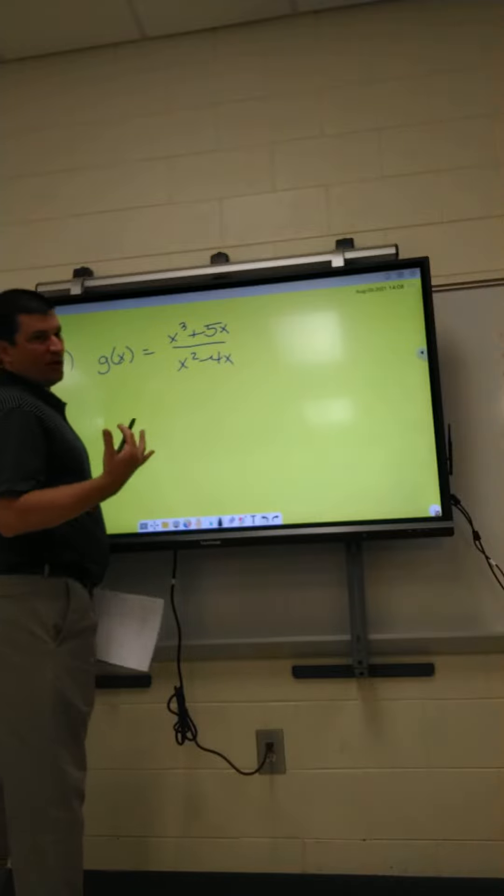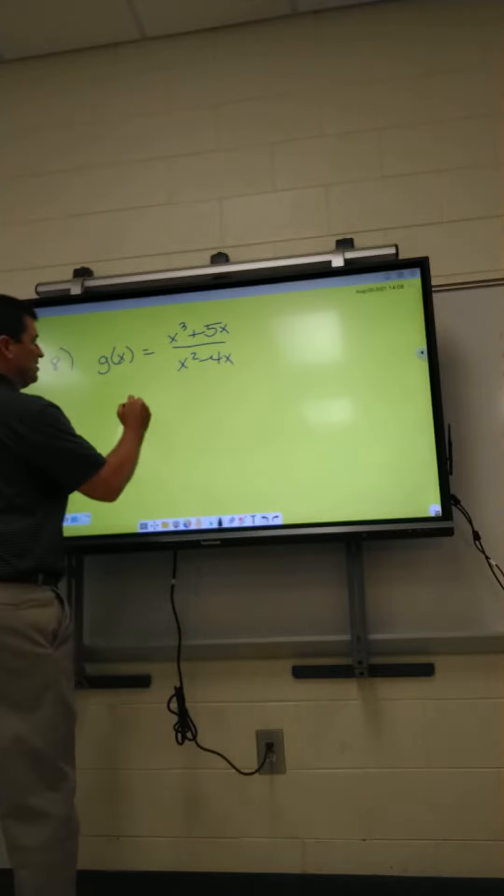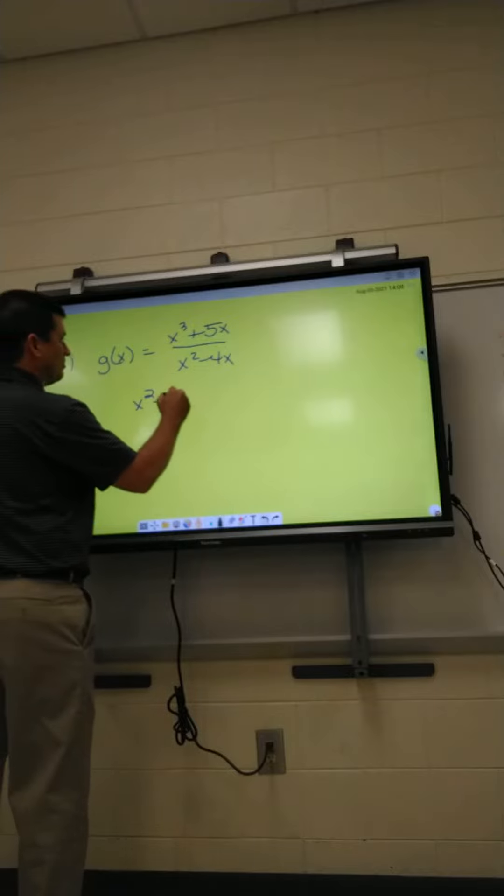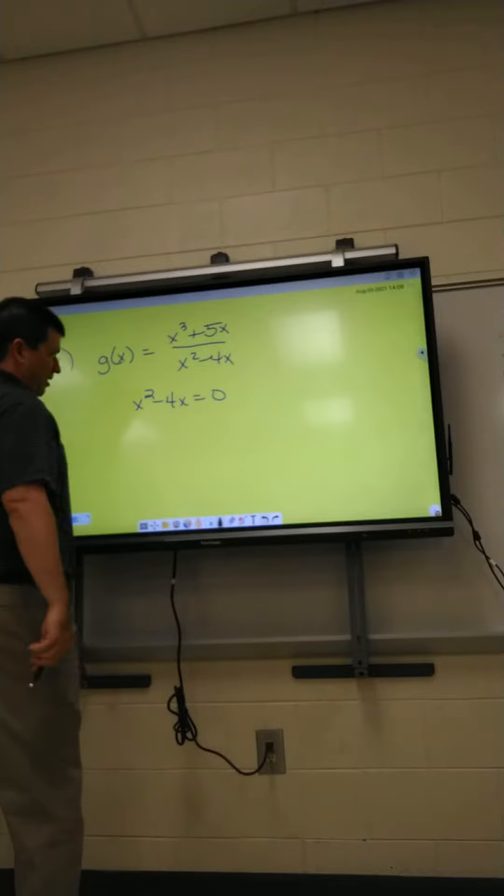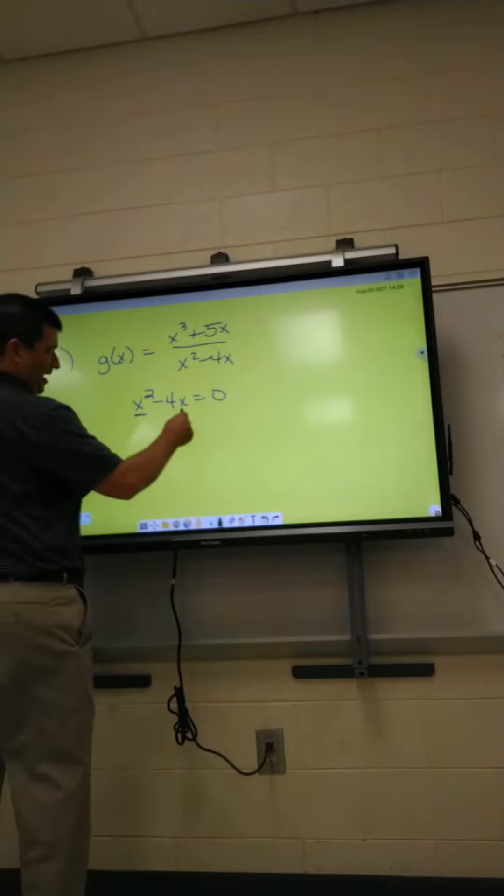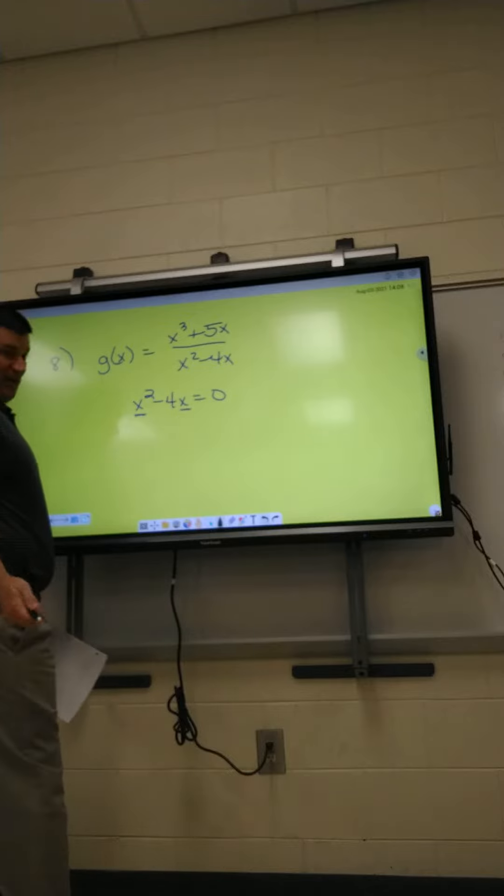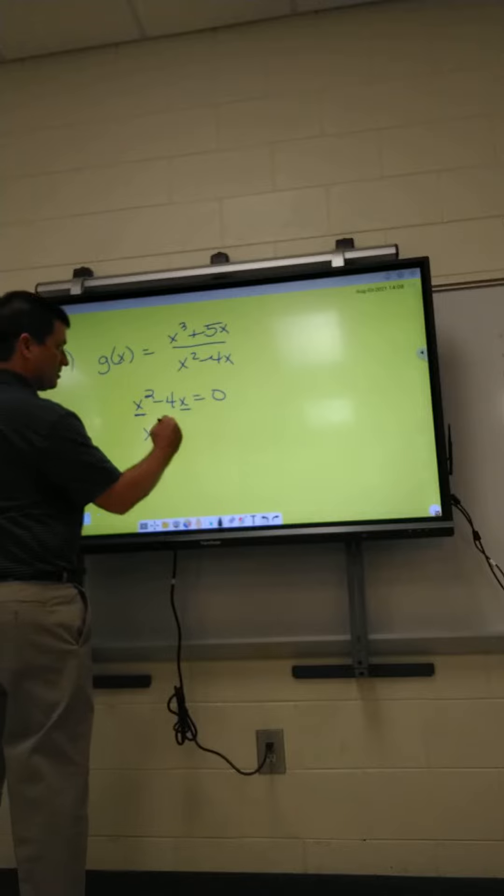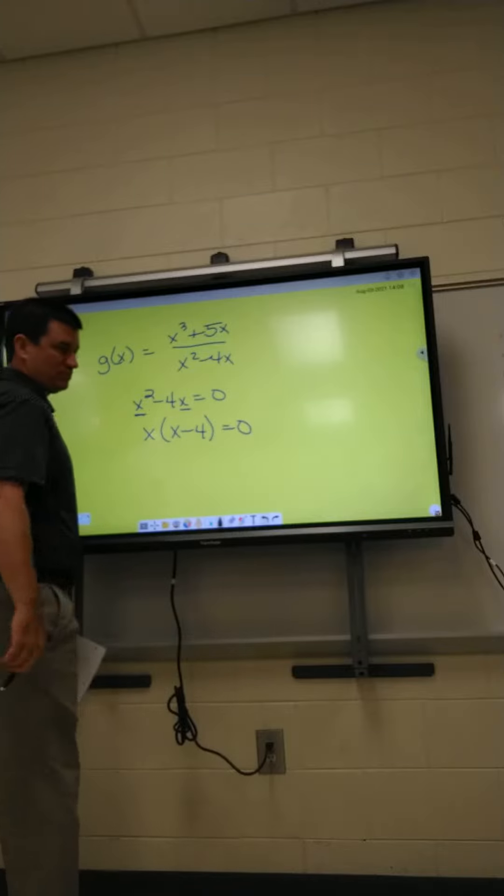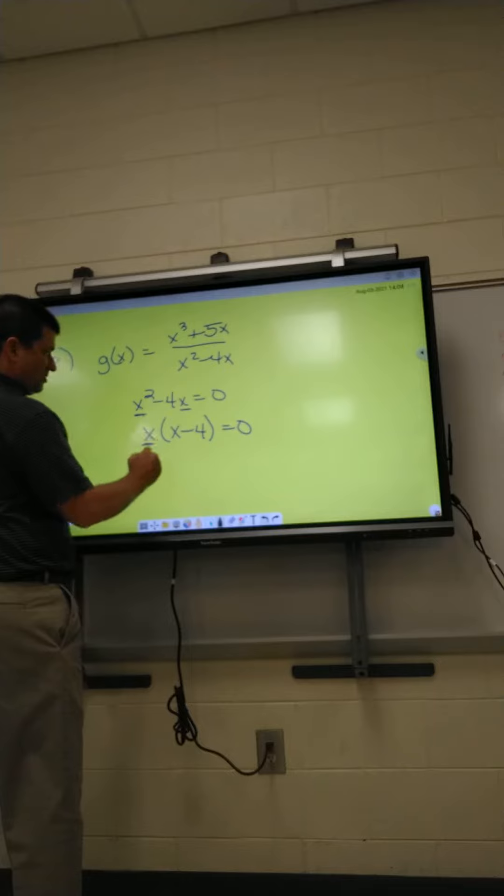All these problems are the same - we take the bottom and set it equal to zero. This one's a little different; I can divide out of x. Both of them have an x in common, so to solve that we're going to factor out an x.